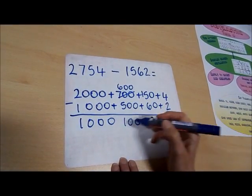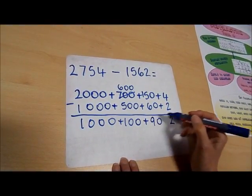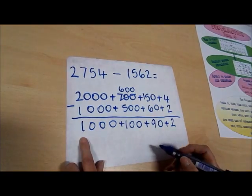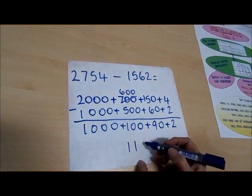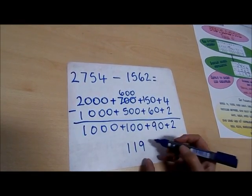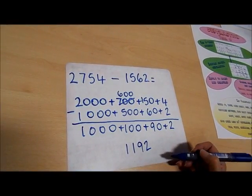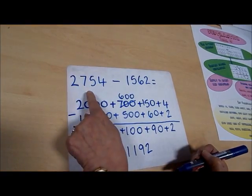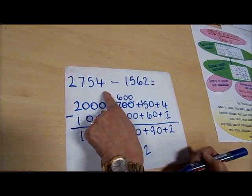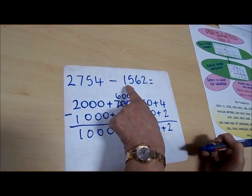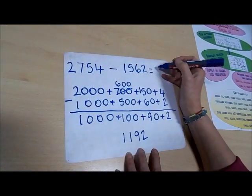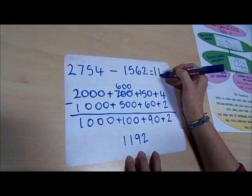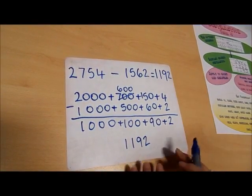So now I'm going to put this number back together again. So we have 1,192. So 2,754 take away 1,562 is 1,192.